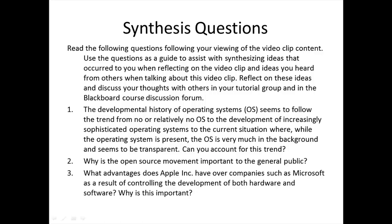The synthesis questions for this video clip are as follows. Number one, the developmental history of operating systems seems to follow a trend from no OS, to increasingly sophisticated operating systems, to the current situation — particularly in mobile devices and the soon-to-be-released Windows 8 — where the OS is very much in the background and appears transparent. Can you account for this trend? Number two, why is the open source movement important to the general public? Number three, what advantages does Apple Inc. have over companies such as Microsoft as a result of controlling the development of both hardware and software, and why is this important? That brings us to the end of the synthesis questions and to the end of this video clip. Thank you.